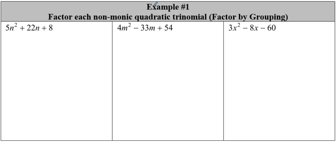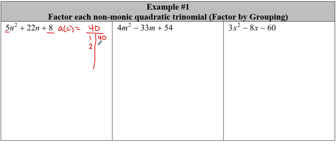All right, let's jump into our first example. We are factoring the same way we did in the last section — factoring by grouping — meaning we take that A term and multiply it to our C term. So A times C is going to give me 40. I'm simply finding my factors of 40: 1 and 40, 2 and 20, 4 and 10.